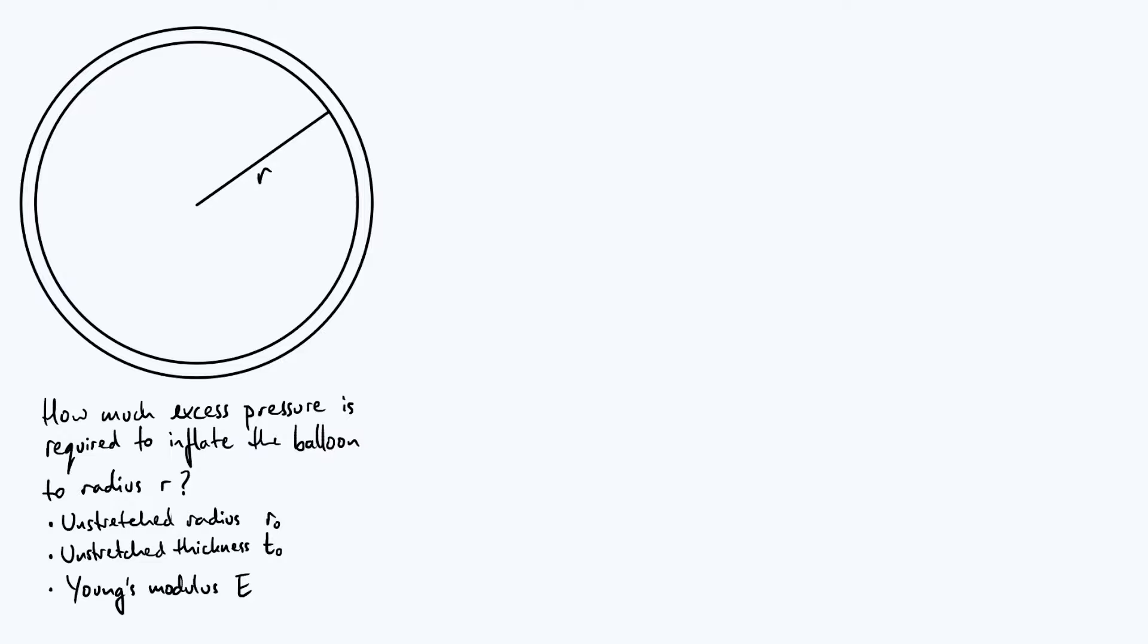Note that I've called it excess pressure rather than just pressure because we're going to have to have a bigger pressure inside the balloon than in the surrounding air in order to counteract the tension forces in the balloon that are trying to make the balloon contract. So the excess pressure is the bit that we care about, which is how far above the atmospheric pressure does the pressure inside have to be.